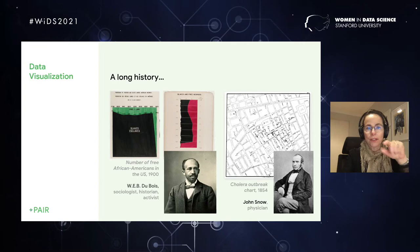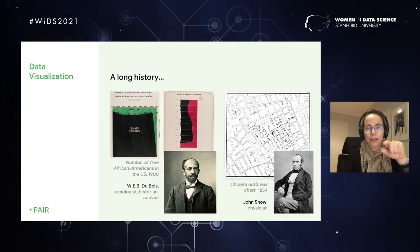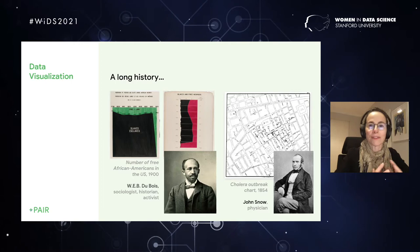And then finally, on the right, Dr. John Snow, who solved the reason for cholera by visualizing where in London cases were happening.